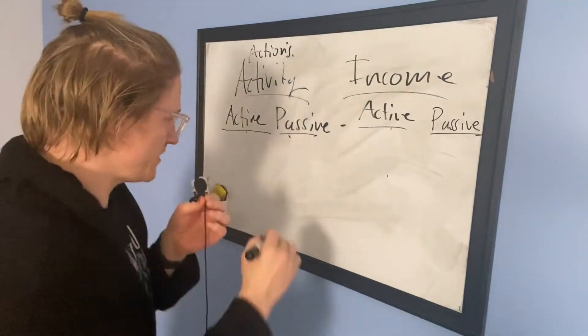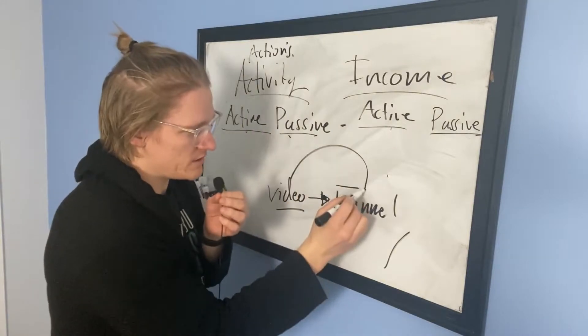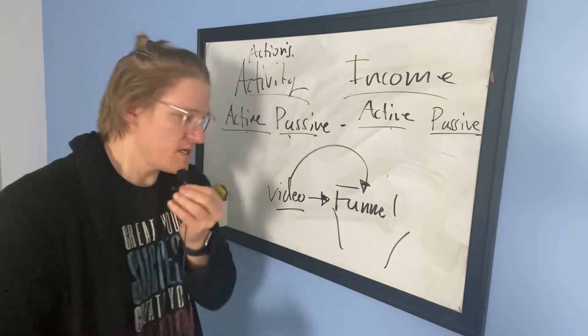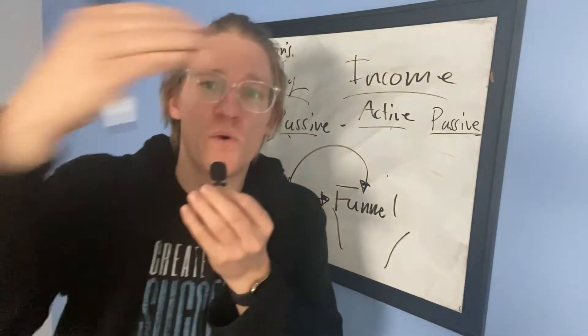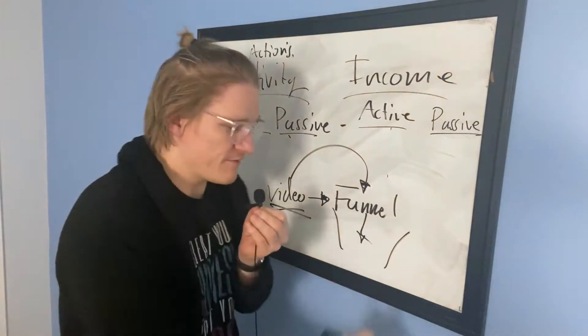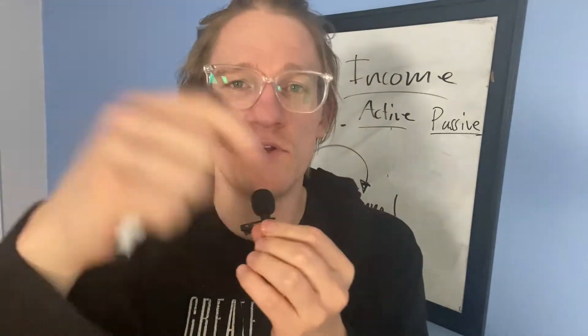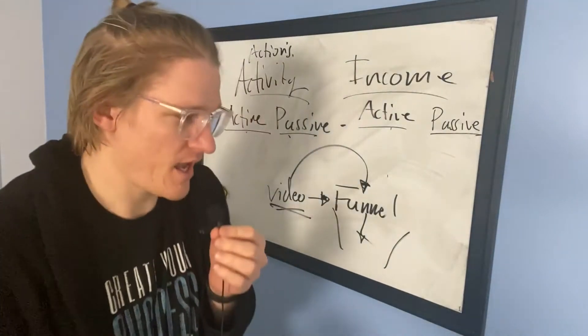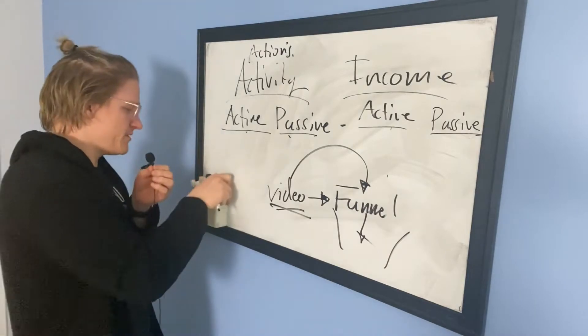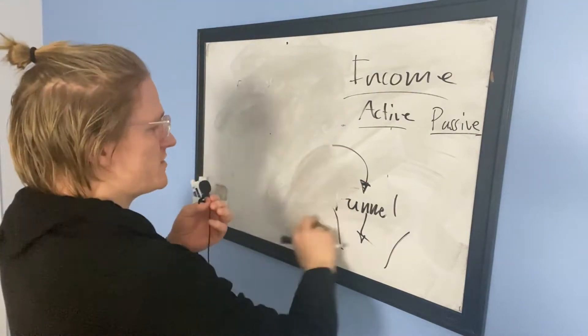So my most important activity is video content, and video content leads into a funnel. The video is like my sales pitch — it's how I'm able to reach a lot of people at one time. Then those people go into the funnel and descend through it. If you want the funnel I use, click the first link below — it's my done-for-you auto recruiting funnel that helps you recruit people into your network marketing business.